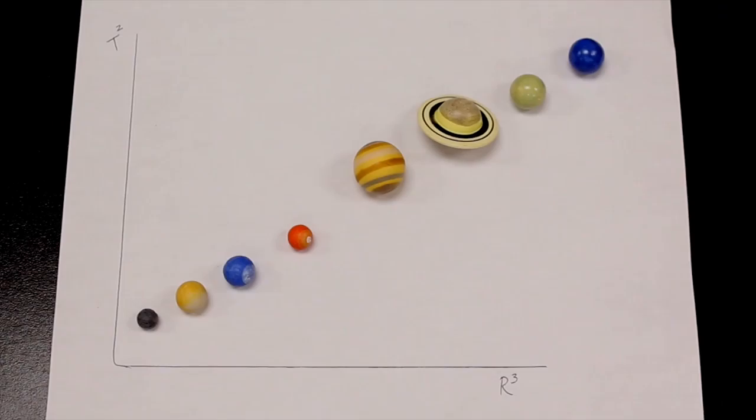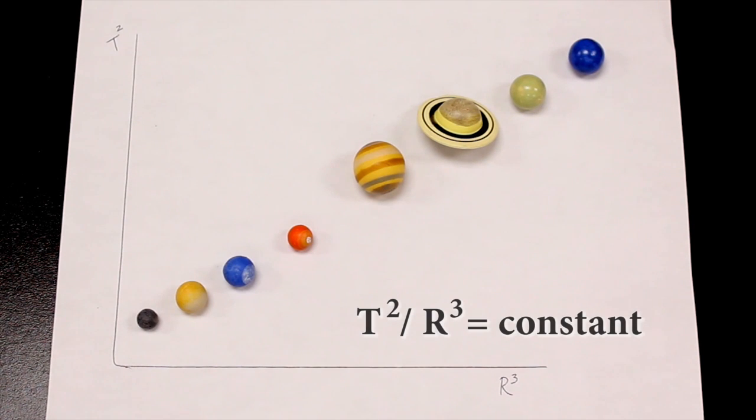Perhaps the most famous best-fit line of all time is the Kepler relationship between the orbital period and the distance from the Sun to the planets. t squared over r cubed.